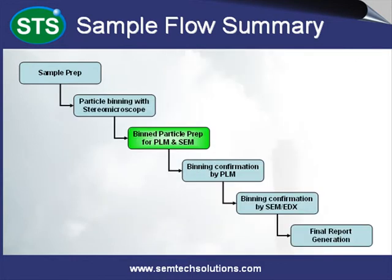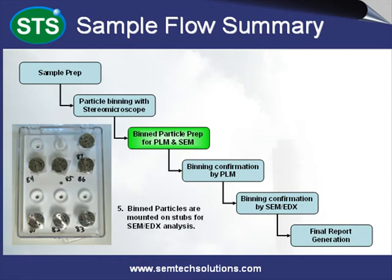For each suspect particle class, one portion is set aside for SEM analysis and the other portion is for PLM analysis. For SEM preparation, each particle class is placed on top of an aluminum stub and labeled. The SEM stubs are then coated with graphite to improve image quality.